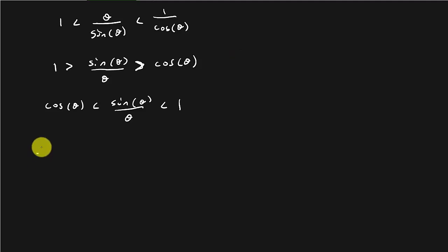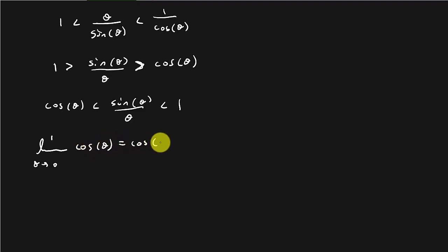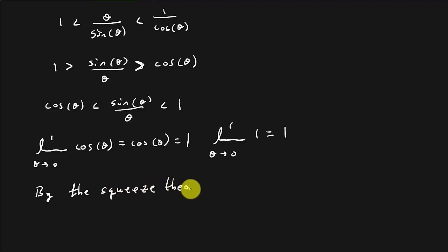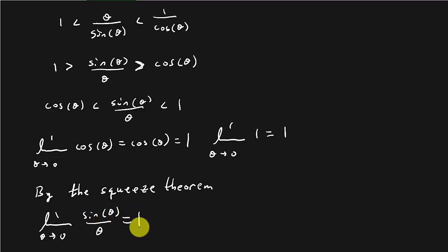Let's take the limit as theta goes to 0 of cosine theta — that equals cosine of 0, which is 1. And the limit as theta goes to 0 of 1 is also equal to 1. So by the squeeze theorem, the limit as theta goes to 0 of sine theta over theta is equal to 1.